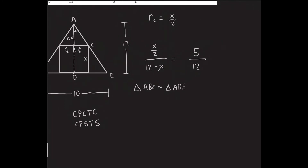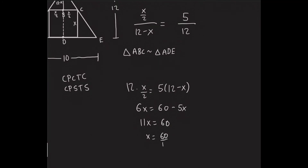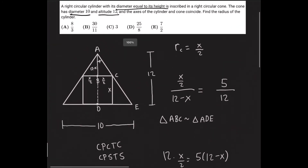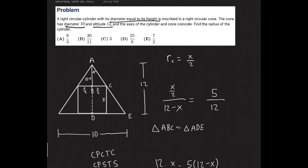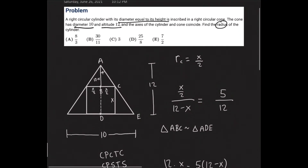Cross-multiplying gives 12 times x over 2 equals 5 times (12 minus x), which simplifies to 6x equals 60 minus 5x. Adding 5x to both sides gives 11x equals 60, so x equals 60 over 11. But we have to remember that x represents the height or diameter of the cylinder, and the question asks for the radius. The radius is x over 2, which equals 30 over 11. That's our answer, which is choice B.